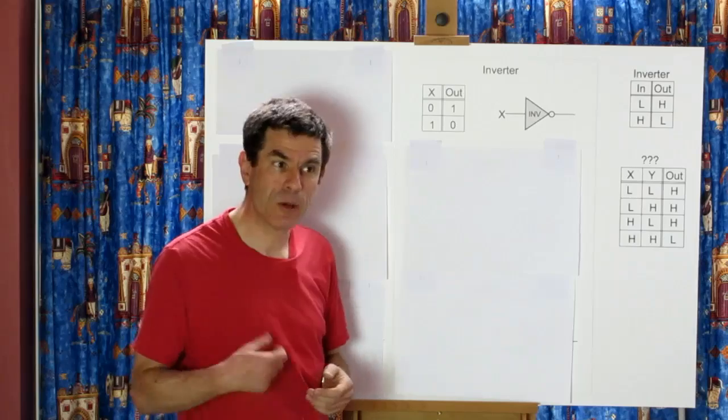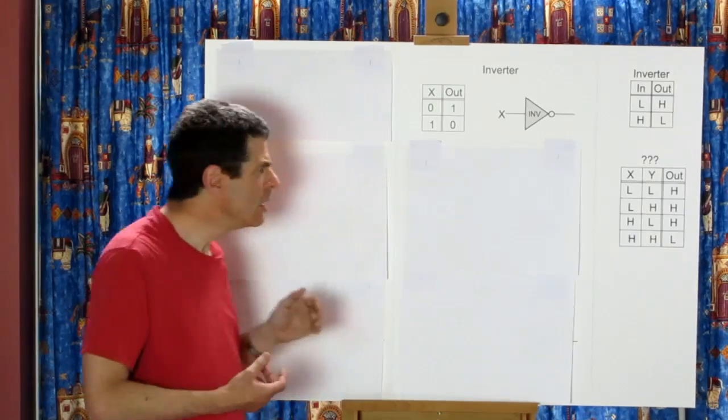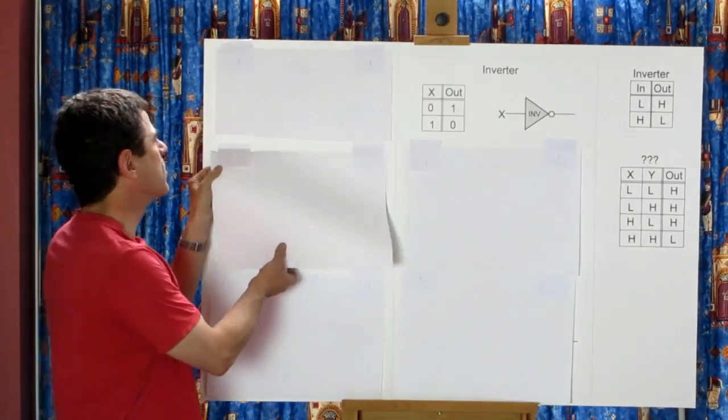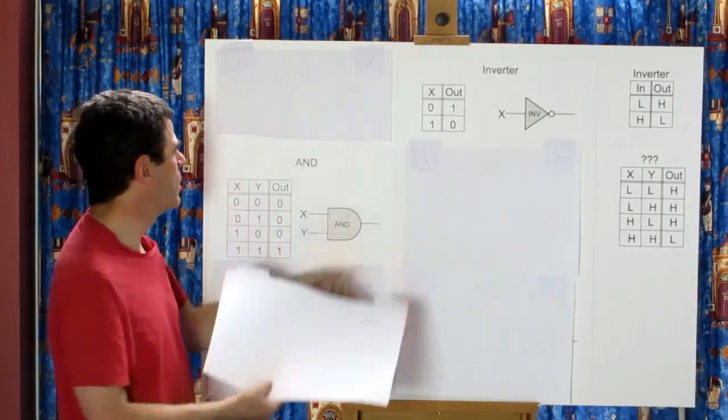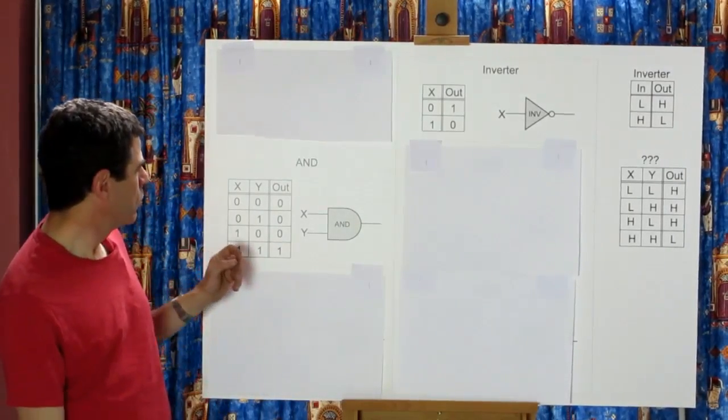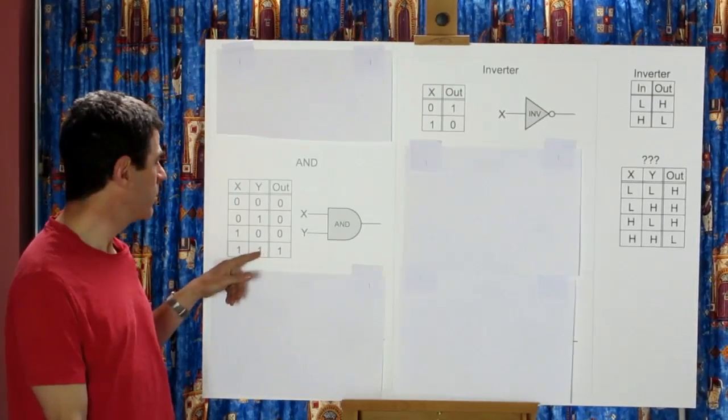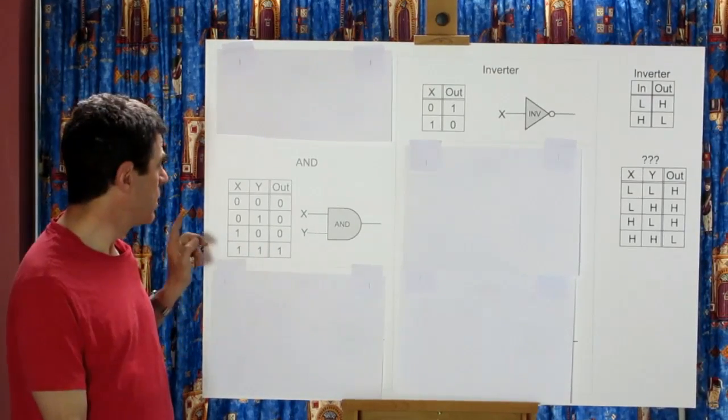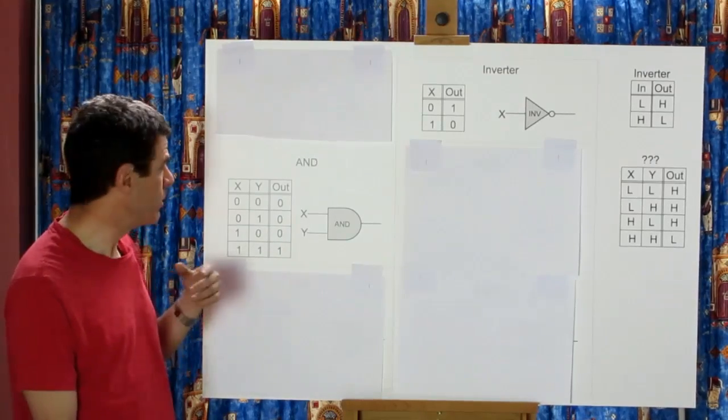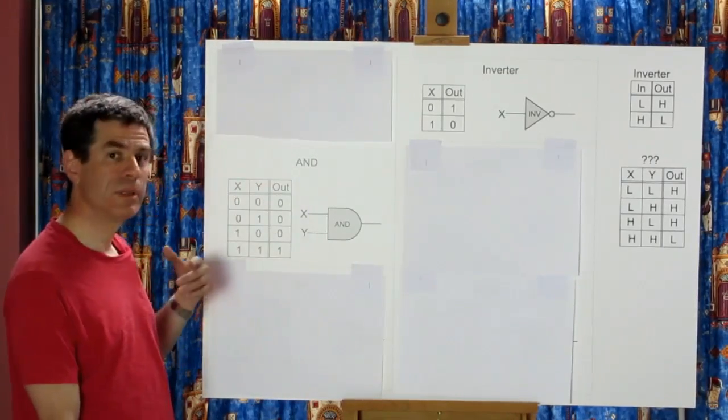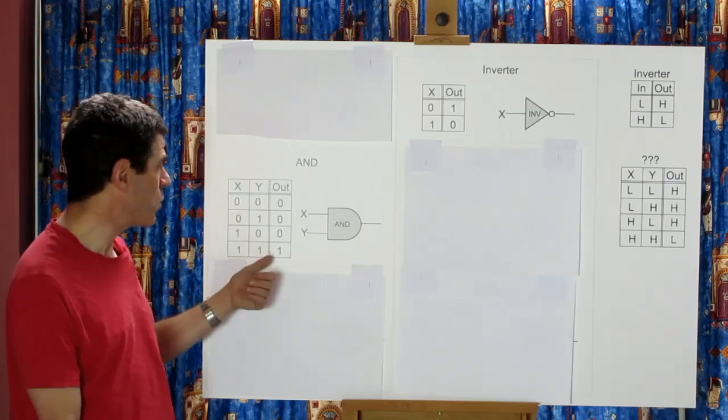They're the AND function and the OR function. So you get a 1 out when the x and the y are both 1. Otherwise you get a 0. So AND function you get a 1 when x and y are 1.